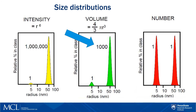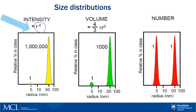For DLS, we normally report size distribution by intensity. Note that intensity is proportional to the radius of the particles to the power of 6, so this technique is very sensitive to the presence of larger particles or aggregates.